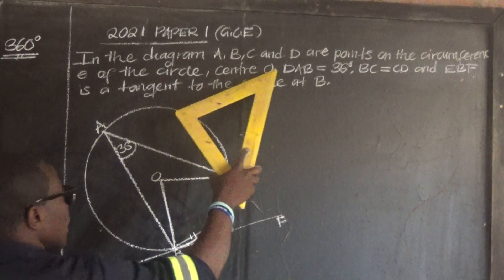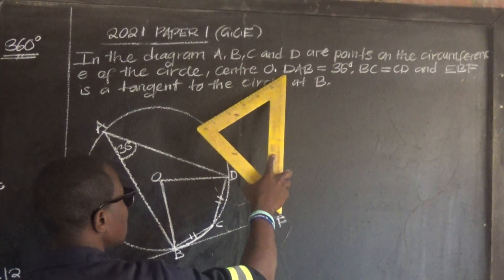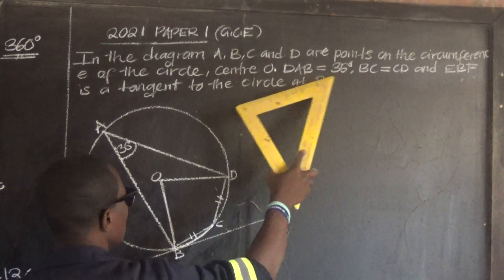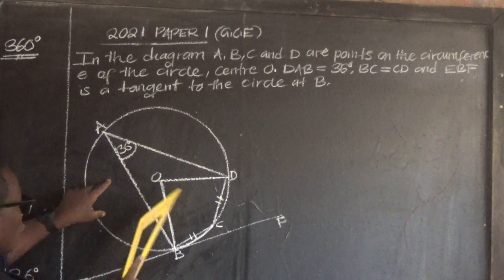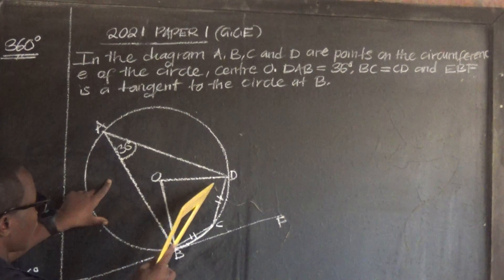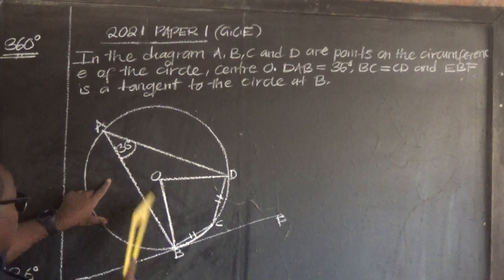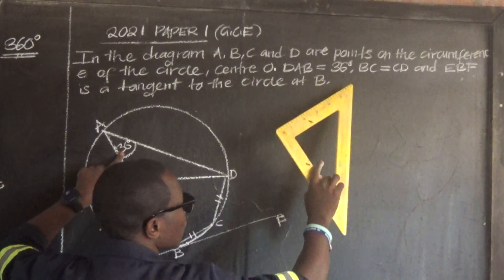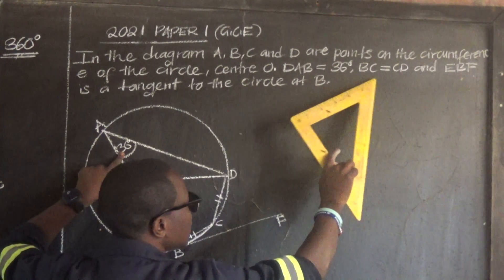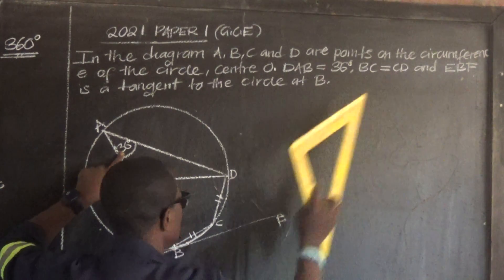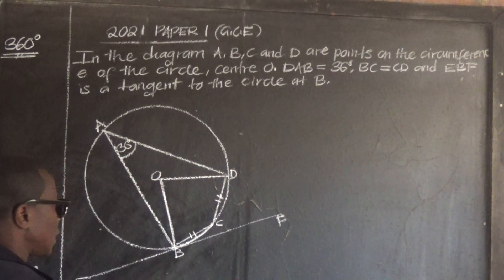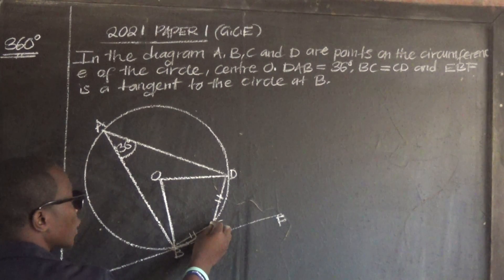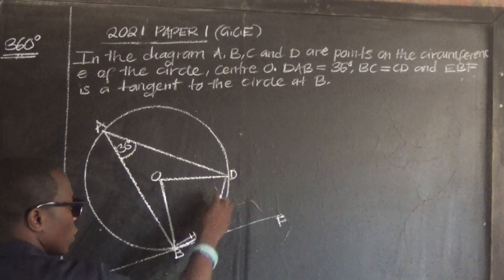Such that angle DAB is 36 degrees — that's given. Then the line BC is equal to CD. Take note: BC is equal to CD — these two are equal. When we have these bars, they are very important; these two are equal.